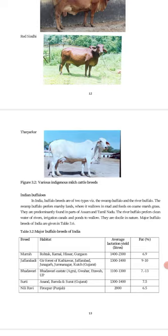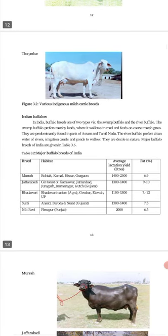We will look at Table 3.2 — major buffalo breeds of India. Just as we studied cattle breeds with their habitats, we will also study buffalo breeds' habitats. For each breed, we need to remember their average lactation yield and fat content. Note that buffalo does not have a hump or dewlap.